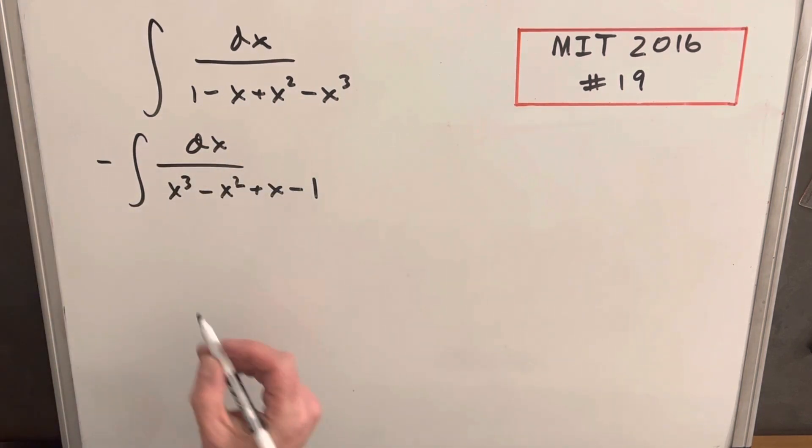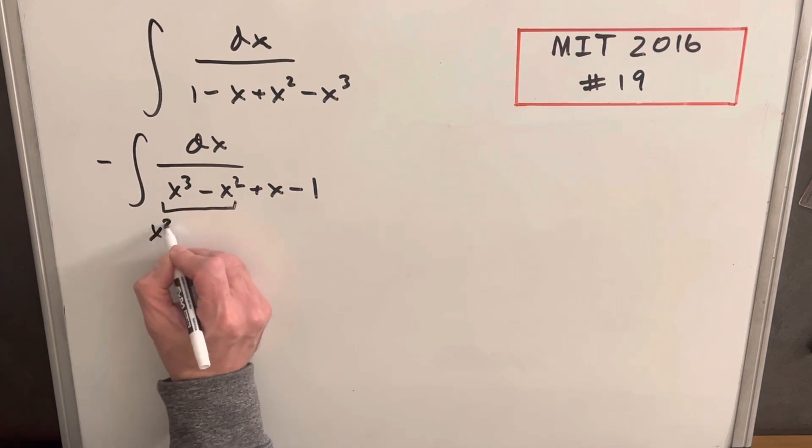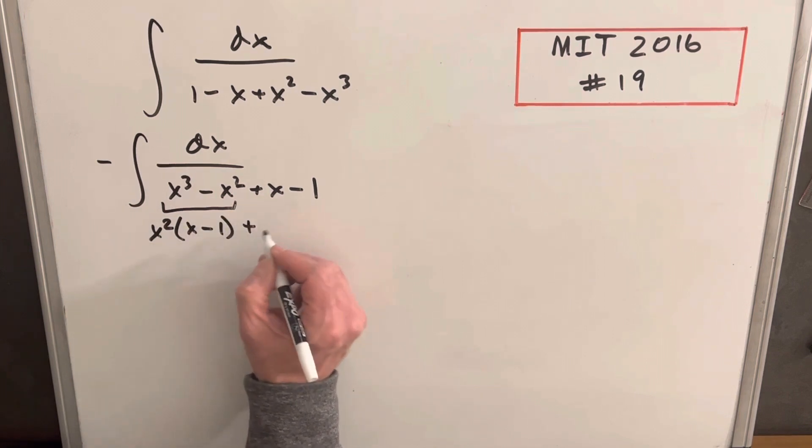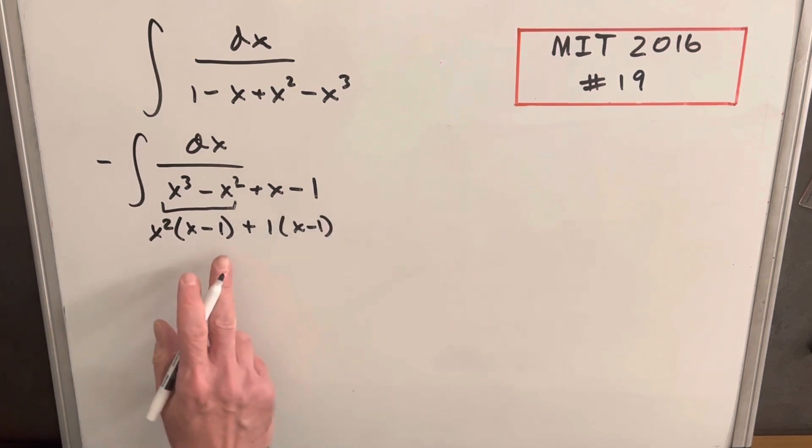Now, from here, what I want to notice, I could probably factor something. What if I factor an x squared out of that? If I take an x squared there, we're going to have x squared times x minus 1, and we have an x minus 1 here, so we could write this like a 1 times x minus 1. And that's going to do is to factor by grouping, and so we can rewrite this.